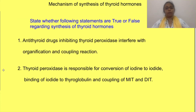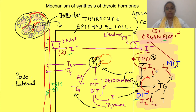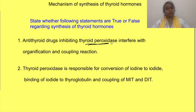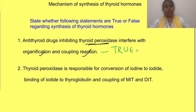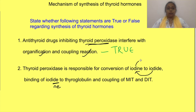Now let's come back to our original question. Thyroid peroxidase is responsible for three steps: oxidation of iodide to iodine, reaction of iodine with thyroglobulin — together known as organification — and coupling of MIT and DIT. So drugs which inhibit this enzyme will interfere with all these steps of thyroid hormone synthesis; therefore, the first statement is true. For the second statement, thyroid peroxidase oxidizes iodide to iodine — not iodine to iodide as stated — so the second statement is false.